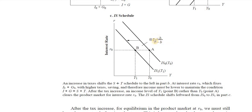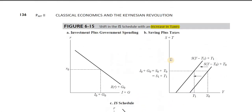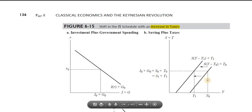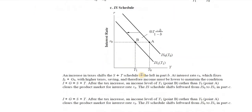The multiplier here is the tax multiplier, which works in reverse: it equals minus b divided by one minus b, where b is the marginal propensity to consume. In summary, what can cause a shift in the IS schedule: number one, changes in government expenditure; number two, changes in taxes — and this can work either way, as government can decrease taxes as well.